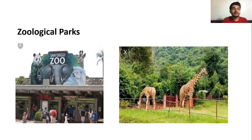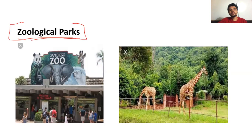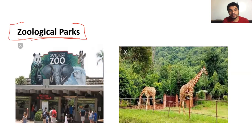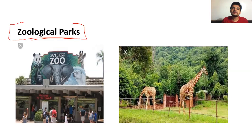Another taxonomical aid is zoological parks. You may have visited zoological parks in your life — these are places where living animals are conserved. We provide them with natural habitats so that they can live more easily in the environment. Some rare species and living animals are conserved in zoological parks. These are the main taxonomical aids we have discussed in this lecture.